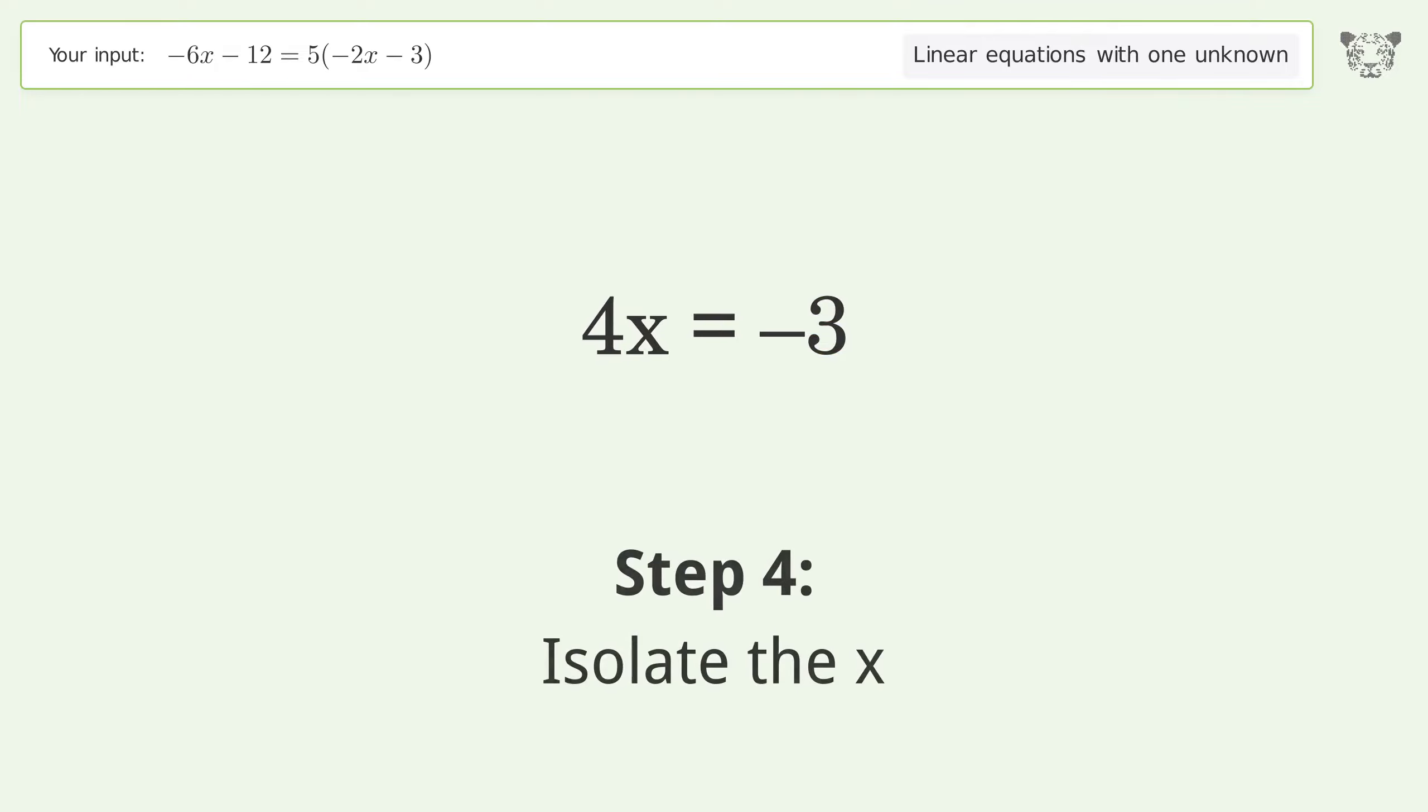Isolate the x. Divide both sides by 4. Simplify the fraction. And so the final result is x equals negative 3 over 4.